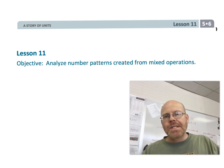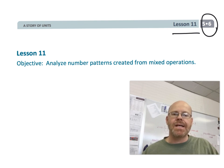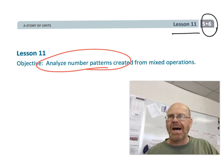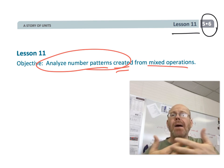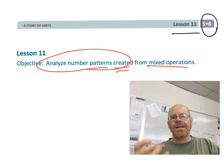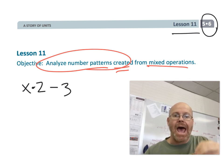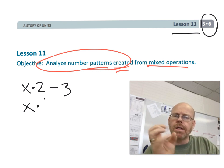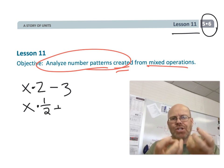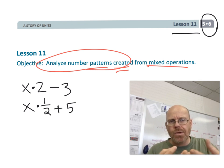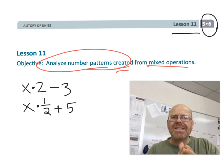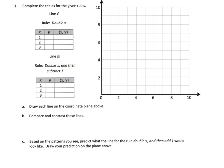This is 5th grade module 6 lesson 11. In this lesson, students are going to be analyzing number patterns created by combination rules — like adding 2 and subtracting 3, or multiplying by a half and adding 5. So we're doing a little bit of multiplication and addition or subtraction in a rule, making it a combined rule. Let's get started. The directions say to complete the table for these two rules.